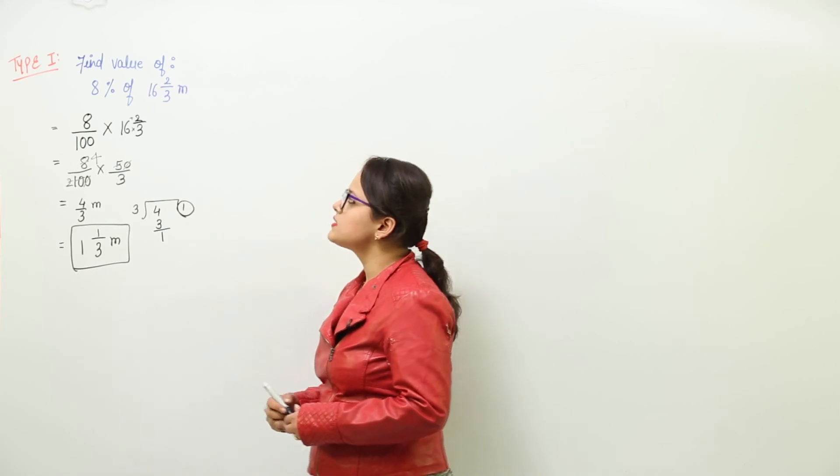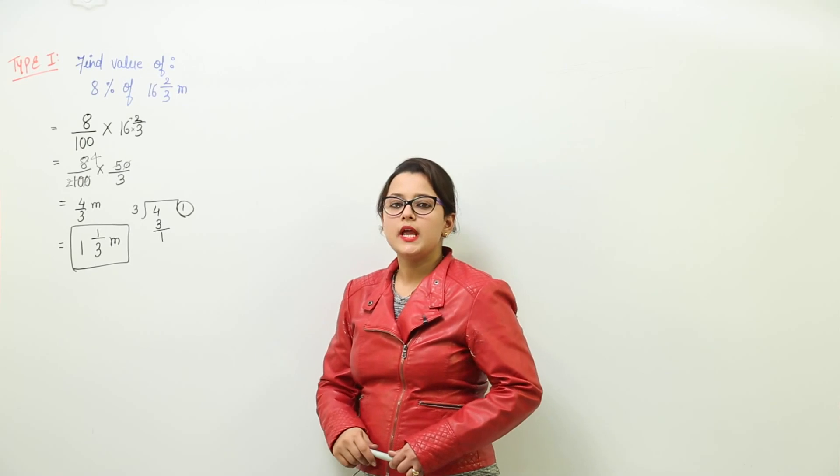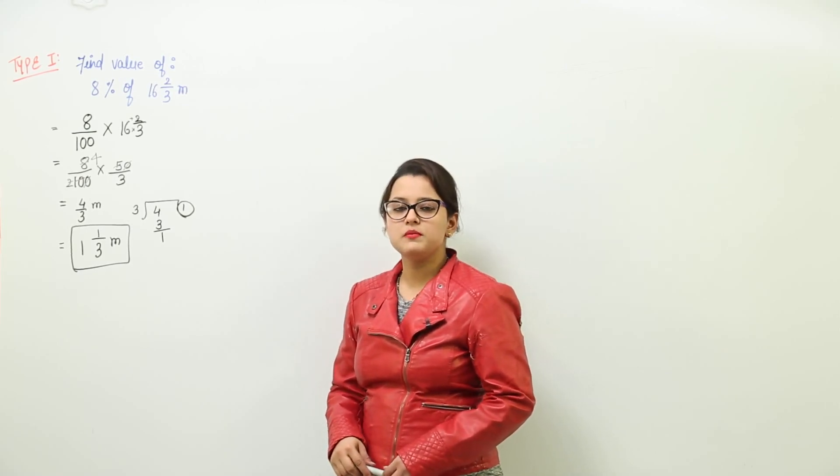So what is 8 percent of 16 whole 2 by 3? 1 whole 1 by 3 meters represents the 8 percent of 16 whole 2 by 3 meters.